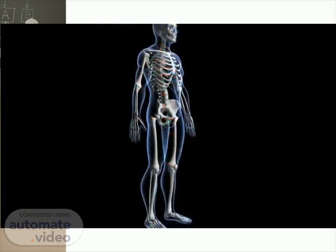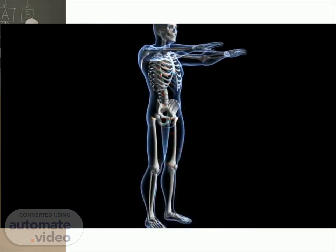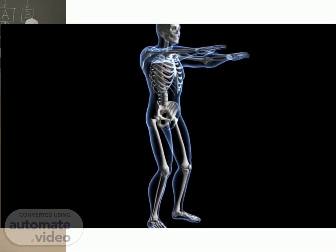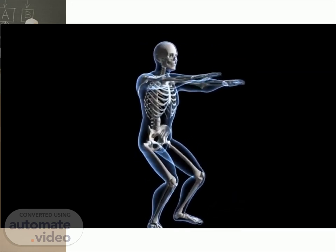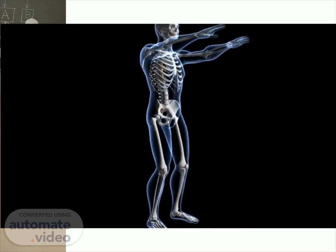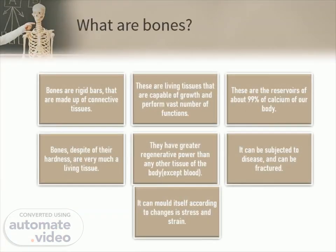The backbone or spine protects the spinal cord, which is the extension of the brain and is extremely delicate. We can stand, sit, and maintain different postures because the skeleton system provides a rigid structure and helps to hold all organs in place. Bones are rigid bars made up of connective tissues. These are living tissues capable of growth and perform a vast number of functions.